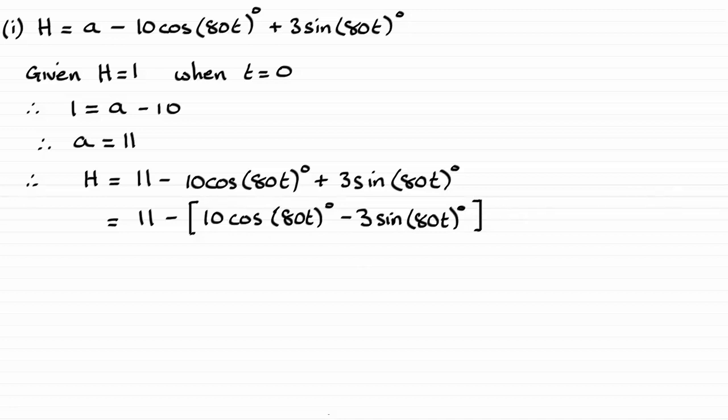We saw that the bit in brackets could be written in the form r cos theta plus alpha. And if we combine that with what we've got here, we end up with 11 minus and the r part was root 109. And we've got the cosine of theta being 80t plus the alpha part, which we found out to be 16.699 and so on.